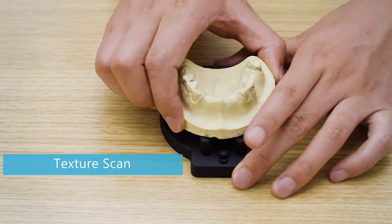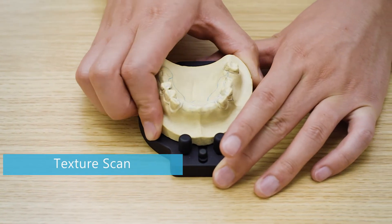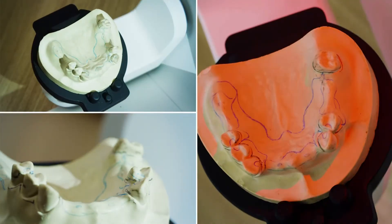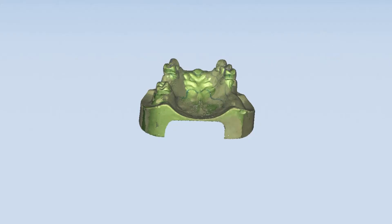Texture Scan is also available with Autoscan DS-EX. With the optimized scan path, the hand-drawn marks on the model can be clearly and fully acquired.